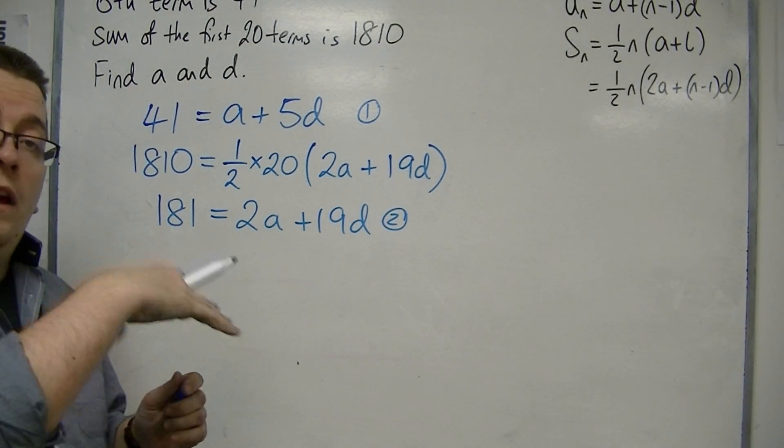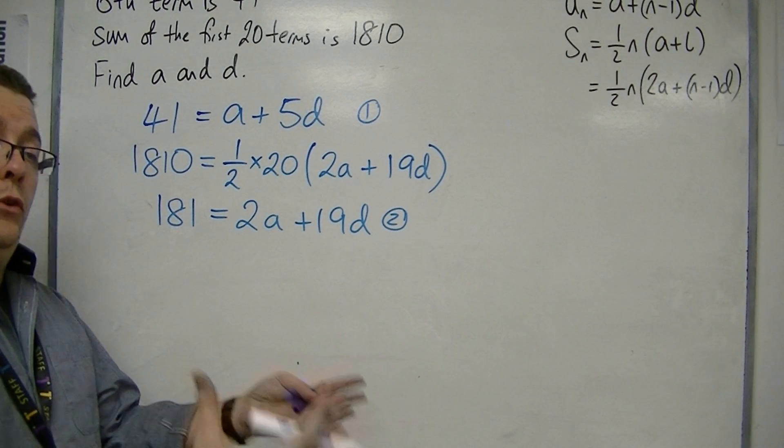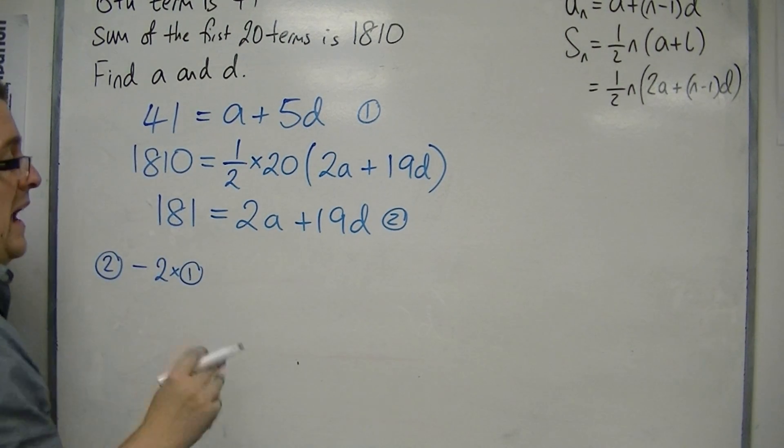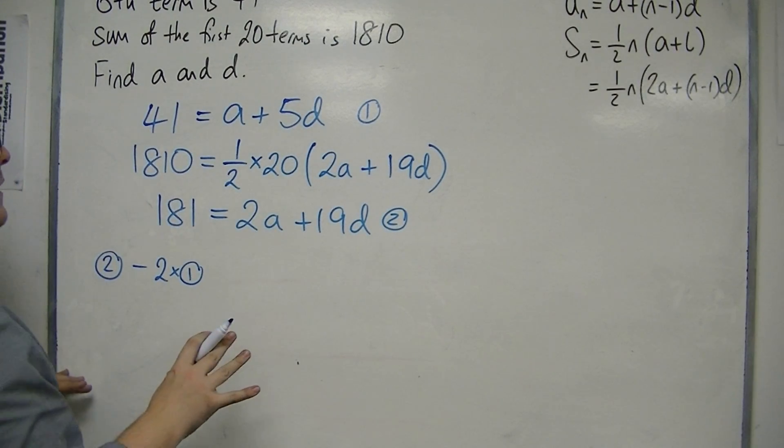So, to work with that, I'm going to have to choose to eliminate either the A's or the D's. So, I'm going to eliminate the A's. That's going to be easier. If I do equation 2, take away 2 lots of equation 1, that will eliminate the A's.